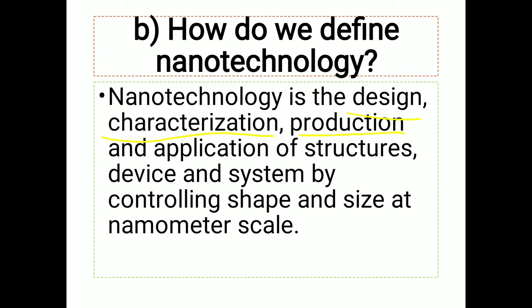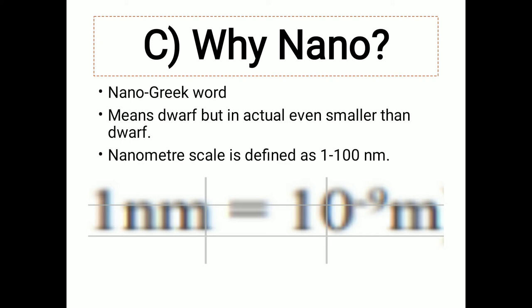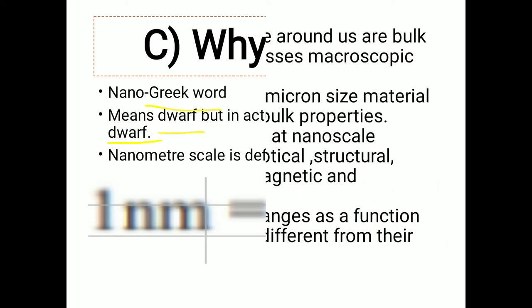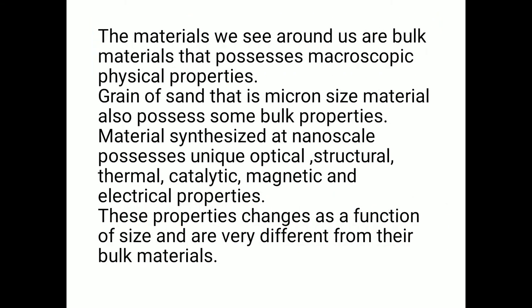Then the question arises in our mind: what is meant by nanometer scale? The word nano is a Greek word meaning dwarf, but in actual fact nano is even smaller than dwarf. The nanometer scale is defined as being in between 1 to 100 nanometers, and 1 nanometer is 10 raised to the power minus 9 meters.